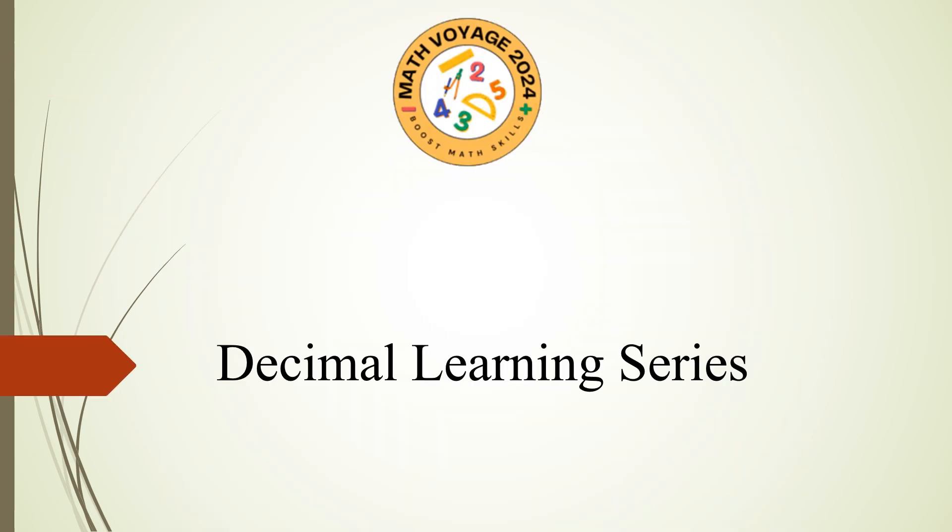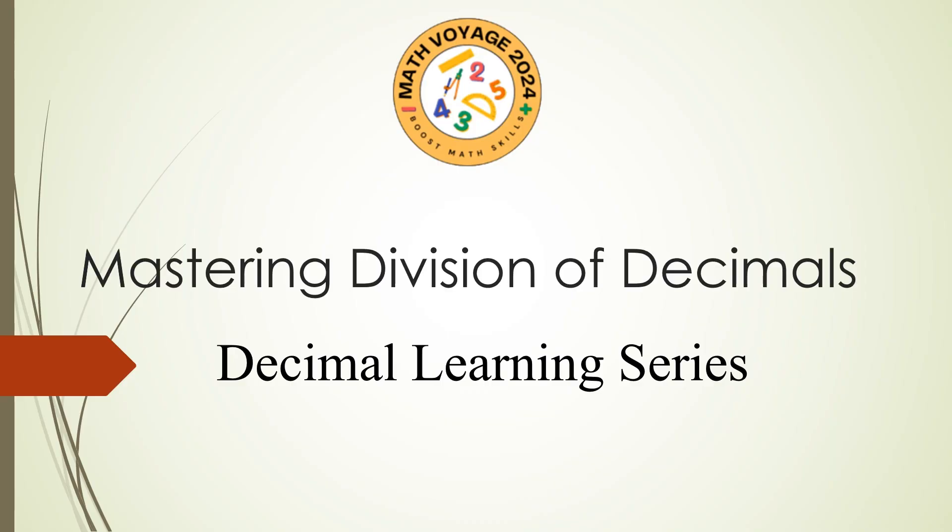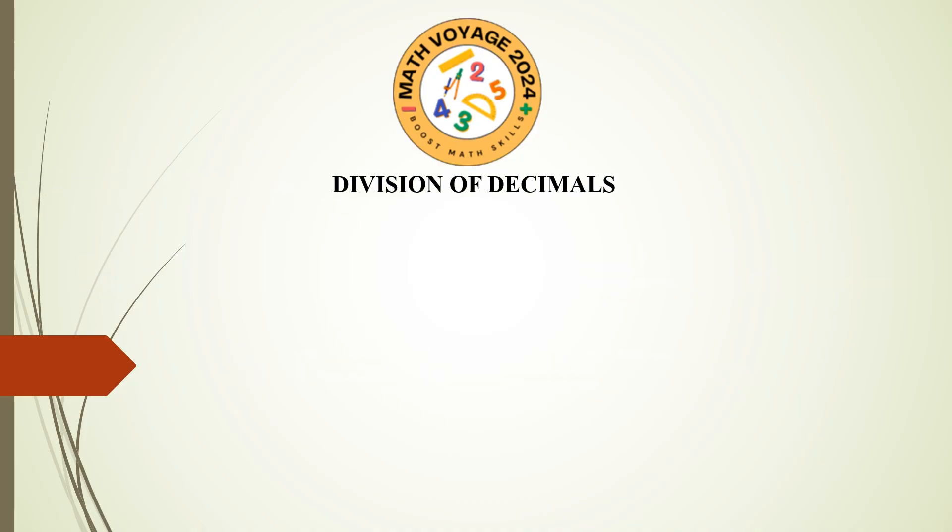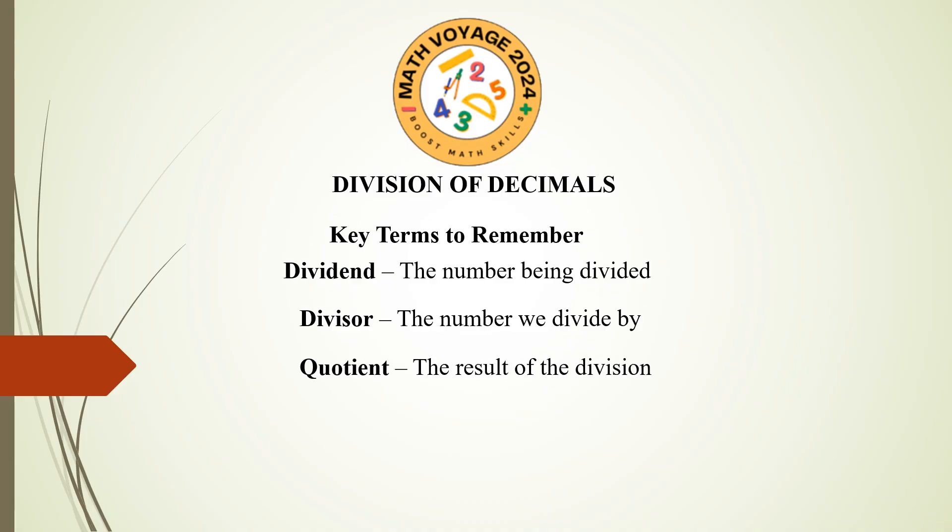Hello and welcome back to the decimal learning series. Today's topic is mastering division of decimals. The key terms to remember in division of decimals are: dividend, the number being divided; divisor, the number we divide by; quotient, the result of the division; and remainder, the part left undivided. In this lesson, we will explore six types of decimal division. So without any further delay, let's get started.